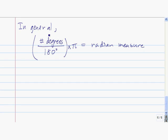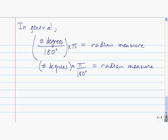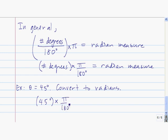More generally, to convert to radian measure we take the number of degrees, divide it by 180, and then multiply it by pi — or equivalently, multiply the number of degrees by pi over 180. For example, to convert 45 degrees to radians, we take 45 times pi over 180. Since 45 goes into 180 four times, 45 degrees is equivalent to pi over 4 radians.